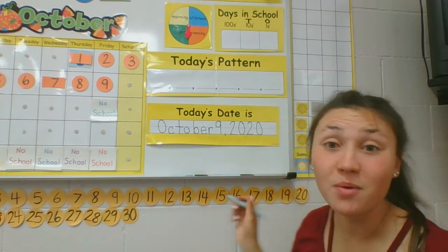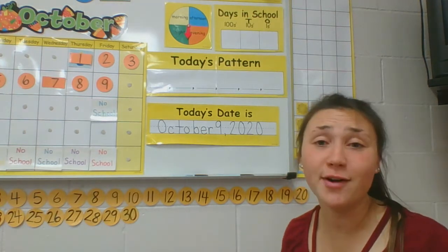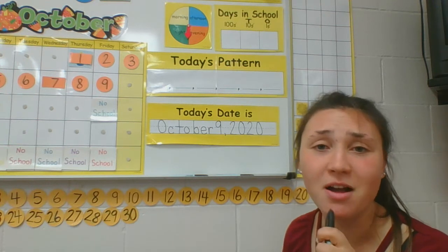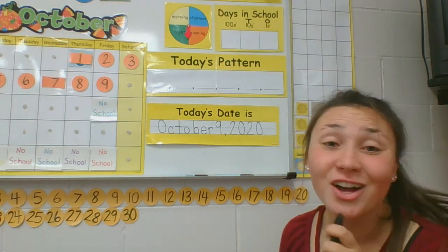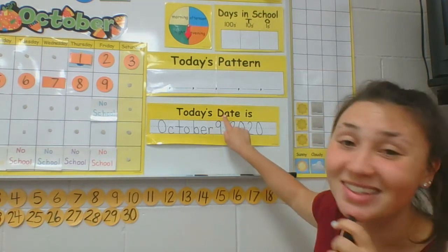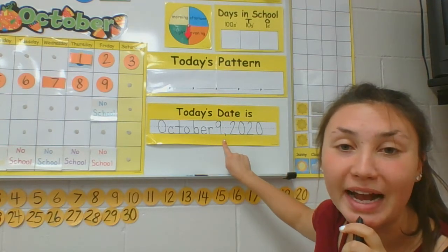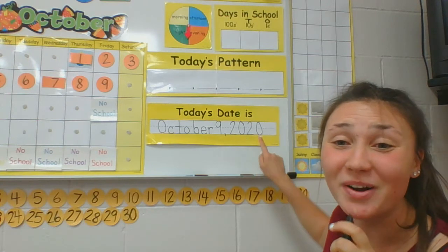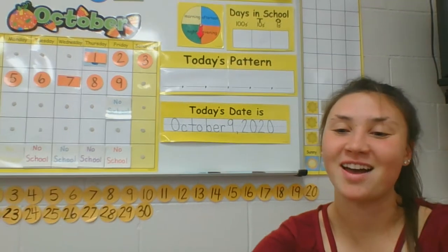All right, so you know what time it is. You can grab your marker or microphone and announce the date with me. Ready? One, two, three. Good morning, Milwaukee. Today's date is October 9th, 2020. Good job, 5K. You're getting good at that.